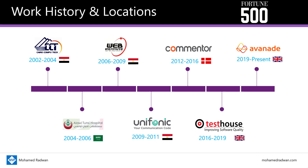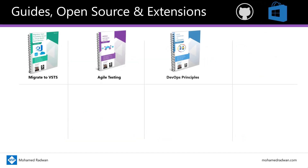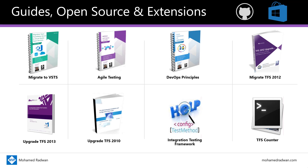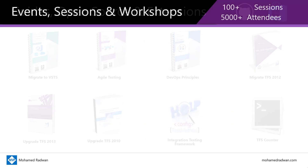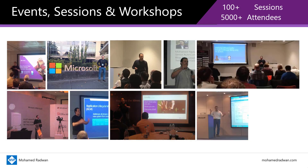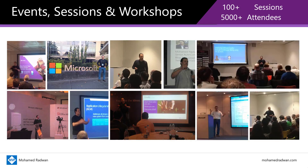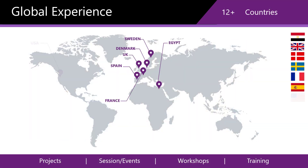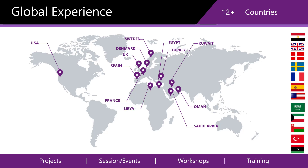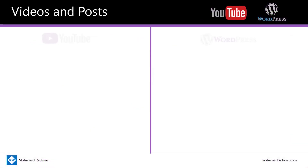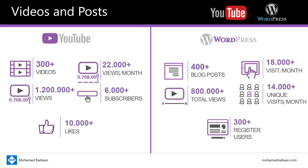I started back in 2002 as a classic ASP developer, relocated multiple times across multiple countries, and worked in several technologies and roles. For the last eight years I moved to a consultancy-based role, helping different companies — some from the Fortune 500 — to improve their software development and delivery using DevOps and automation. I have authored several frameworks, command-line tools, and guides available on GitHub and Azure DevOps Marketplace, and have presented in user groups, conferences, and customer sites in different countries.